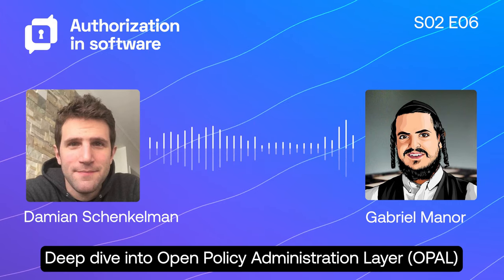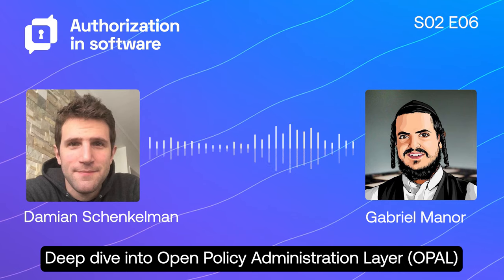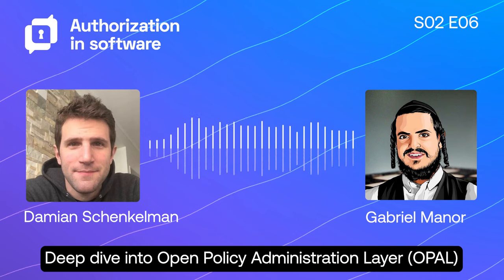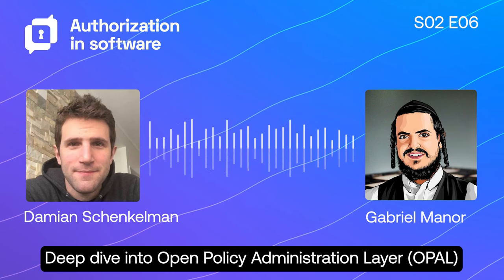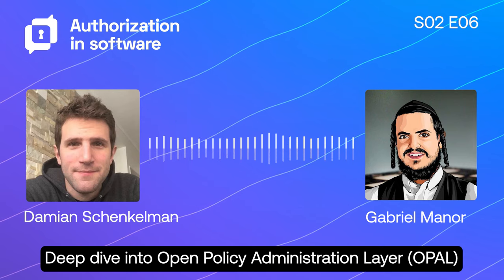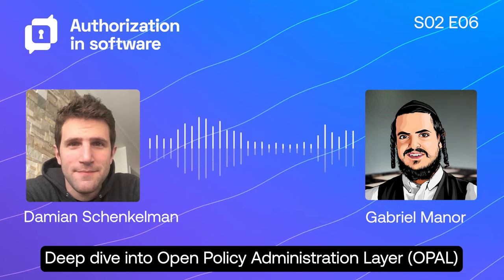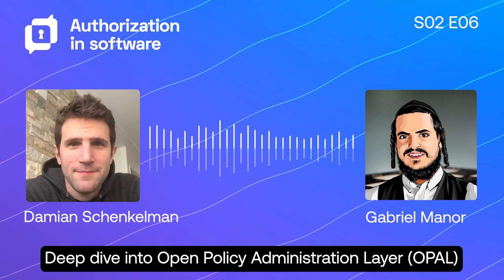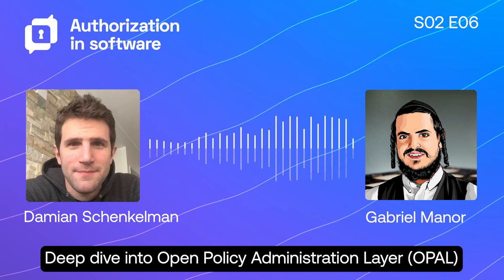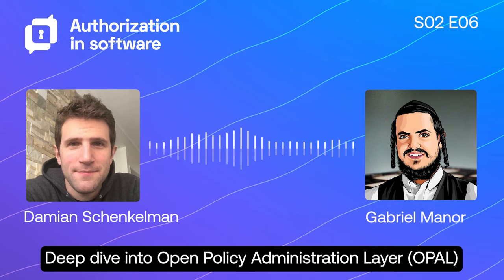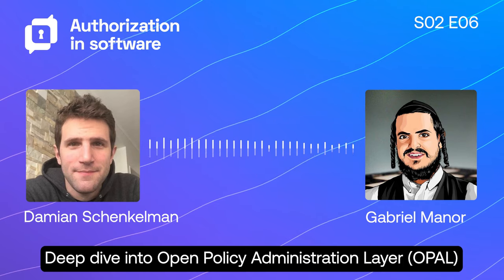I worked at Cisco for five years, then moved to Palo Alto Networks, also working around security operation control rooms. A lot of that work was about broken access control. For the last couple of months, I've been working at Permit.io, a startup that brings authorization for application developers as a service, which is a growing trend. Now I'm doing it from the go-to-market perspective as a developer advocate.